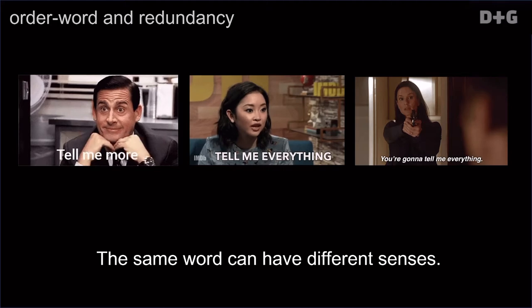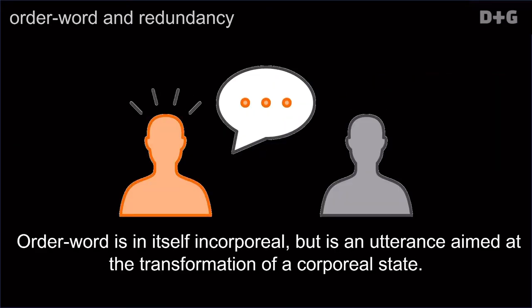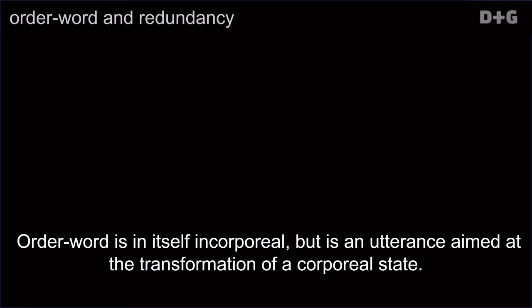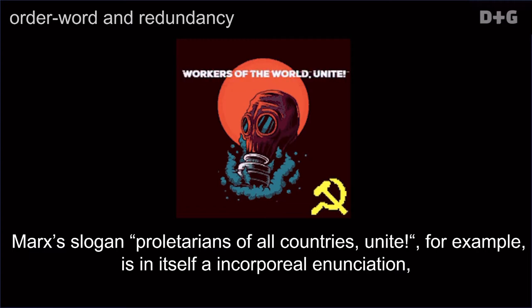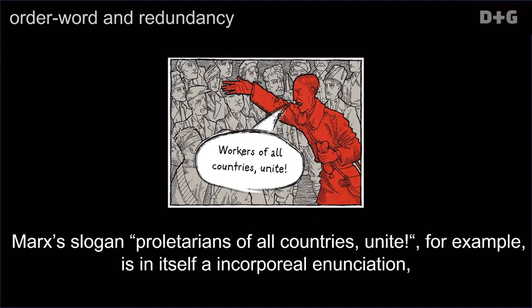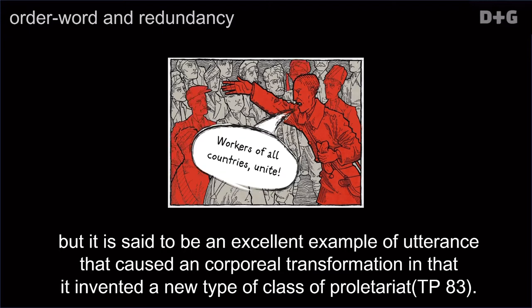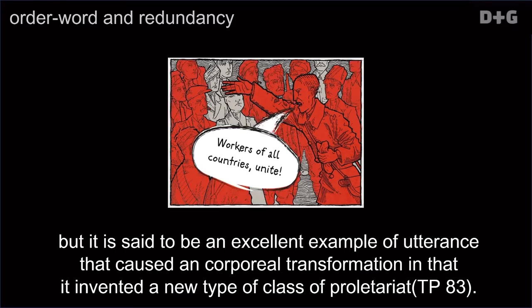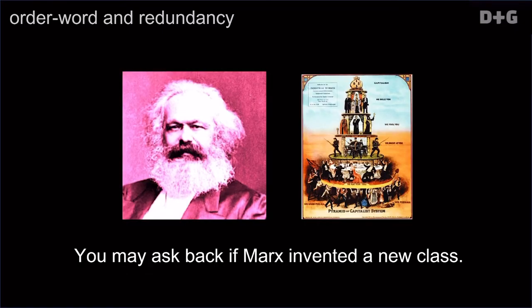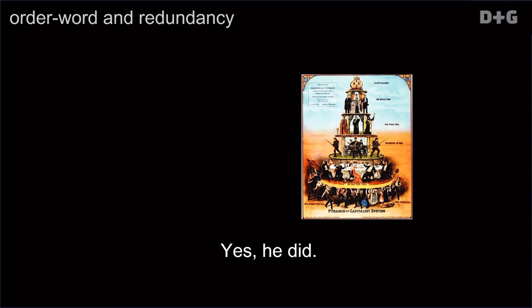All the word is in itself incorporeal, but it is an utterance aimed at the transformation of a corporeal state. Marx's slogan, "proletarians of all countries unite," for example, is in itself an incorporeal annunciation, but it is said to be an excellent example of utterance that caused a corporeal transformation in that it invented a new type of class of proletariat. You may ask back, if Marx invented a new class? Yes, he did.